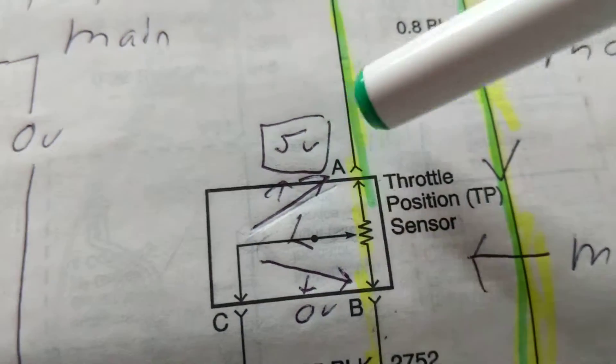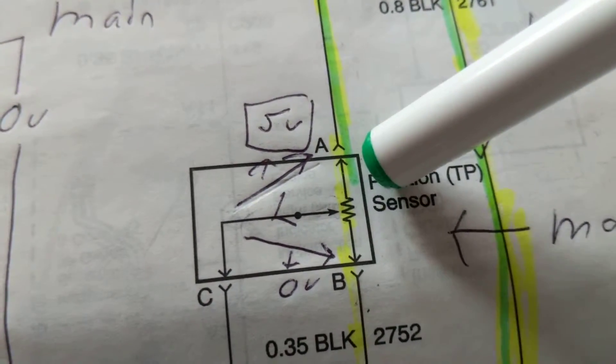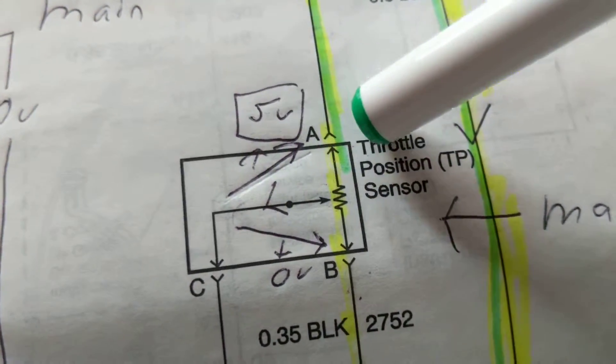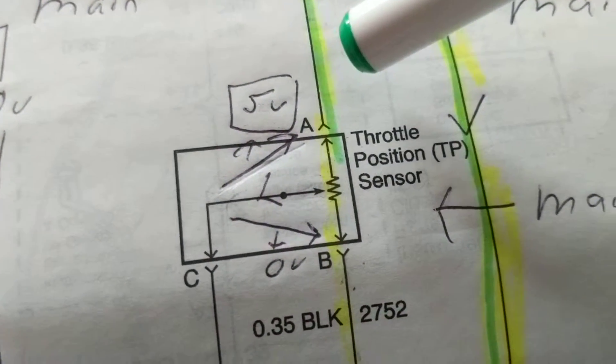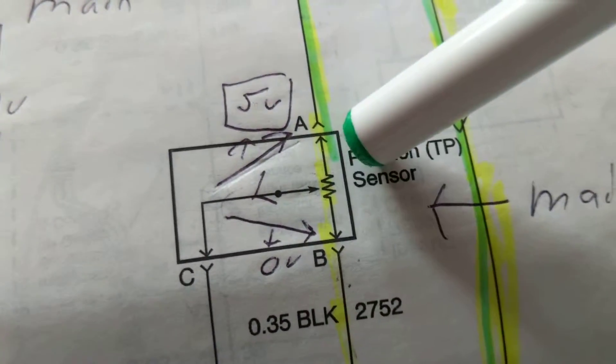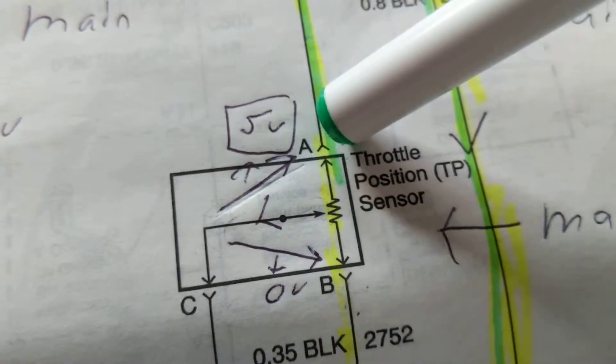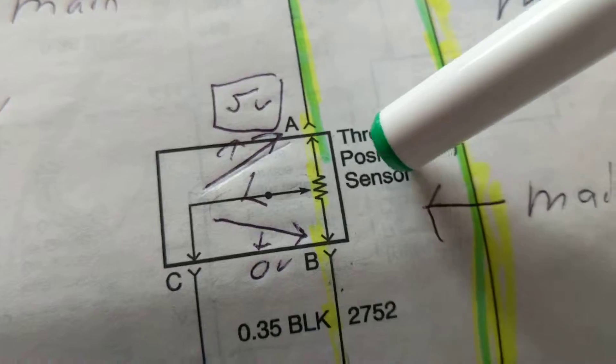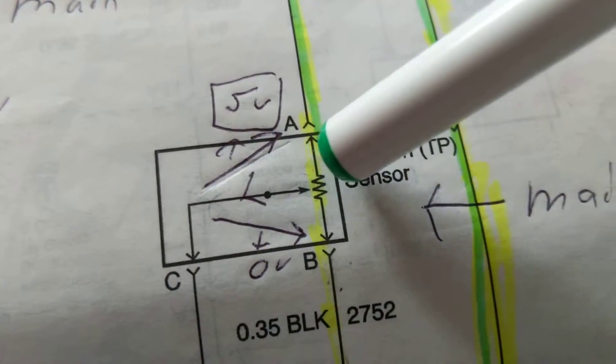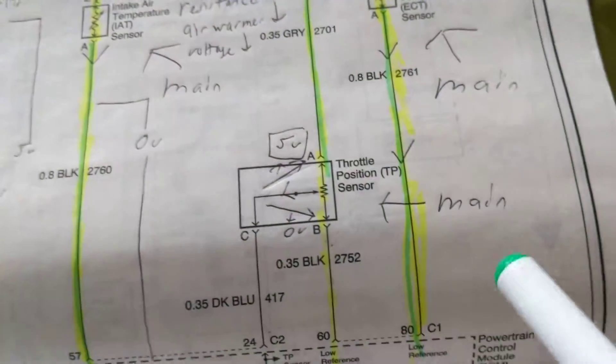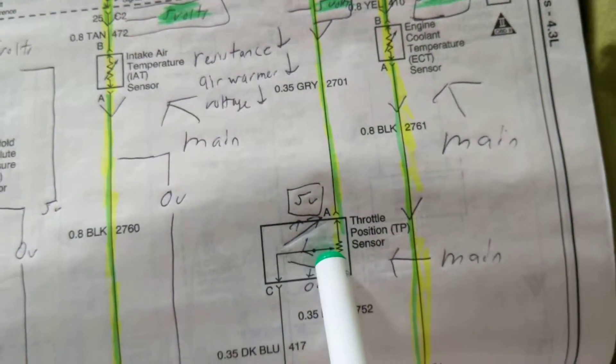When you step on the gas pedal, you're opening up the throttle plate, letting in more air which means more fuel. Therefore, if you put a scanner on it in degrees, it'll tell you how much degrees it is changing, which is corresponding to voltage again. So therefore if you open the throttle position sensor, you'll have variations of voltage relating to that. Therefore it tells the computer how much air is going in.